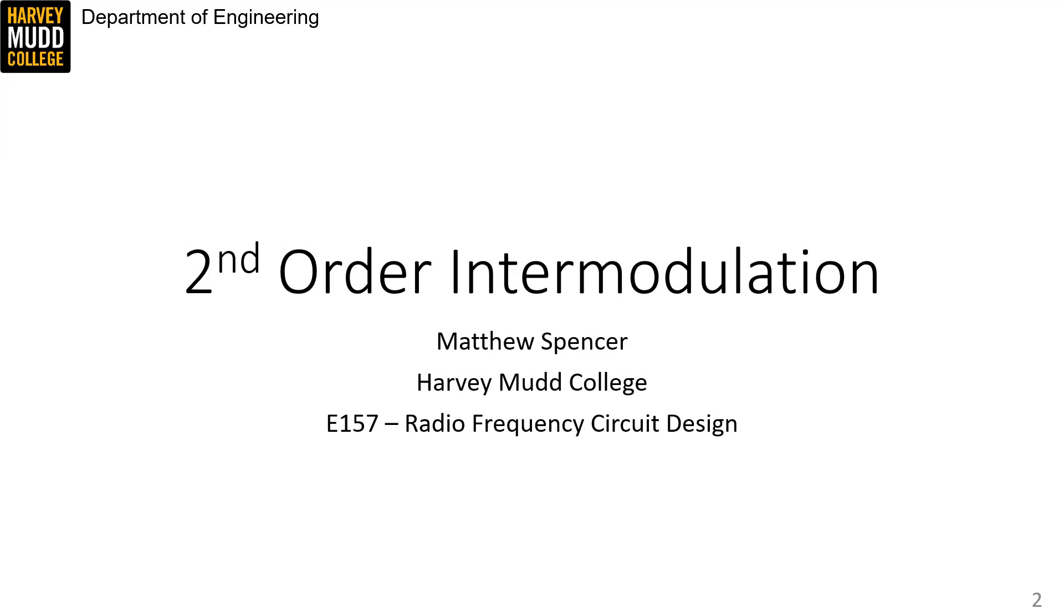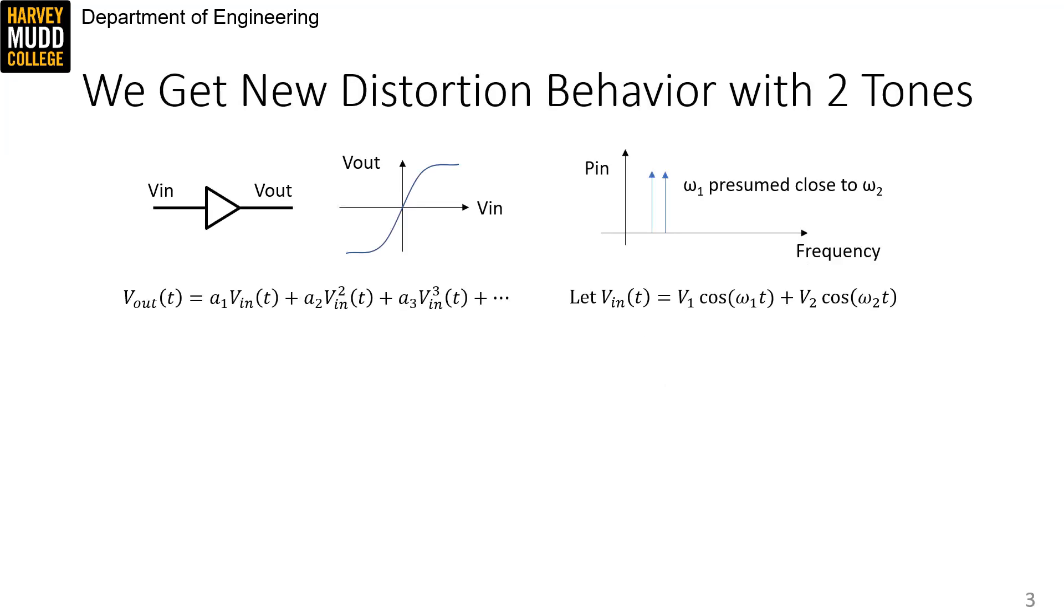This is a form of distortion that arises when you drive nonlinear elements with two sinusoids. We're starting with our picture of a nonlinear amplifier represented by a Taylor series, and we're going to assume that our input is two sinusoids of similar frequency, which is different than the single sinusoid we've been testing with so far. This input signal is called a two-tone test.